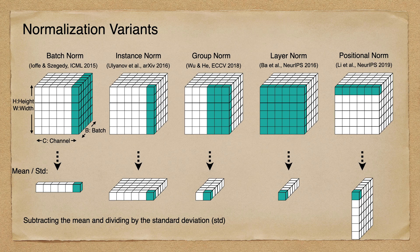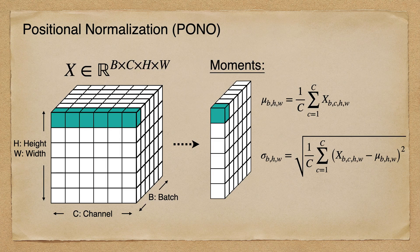Here we show five of the most popular normalization methods and how they compute the statistics. In the figure, each green voxel represents an operation unit, and below we display the extracted information. These extracted feature normalization moments contain very useful information. For example, the extracted moments of positional normalization could reflect the statistics of each pixel, which could be an important feature to be used.